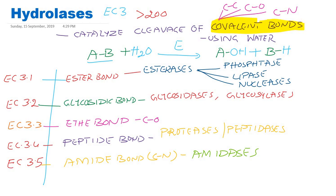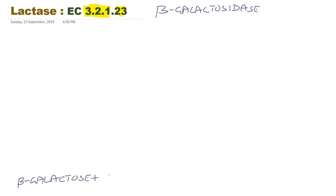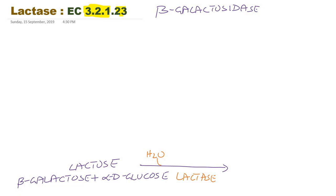I will explain by giving one example for the action of a Hydrolase enzyme. I am taking the example of lactase. Its enzyme commission number belongs to class 3, subclass 2, sub-subclass 1, and it is the 23rd enzyme in this series — EC 3.2.1.23. The other name for lactase is beta-galactosidase. This enzyme helps in digestion of the sugar present in milk. Lactose is a disaccharide made up of beta-D-galactose and alpha-D-glucose.